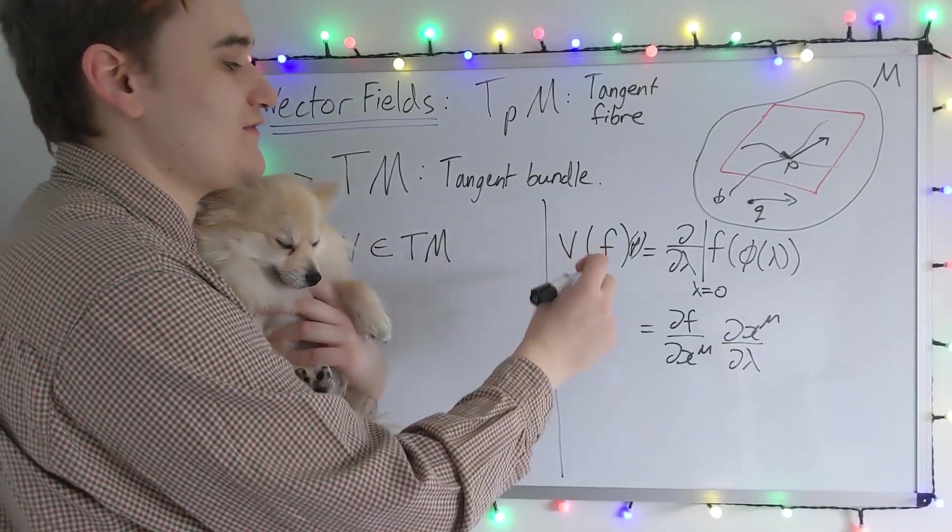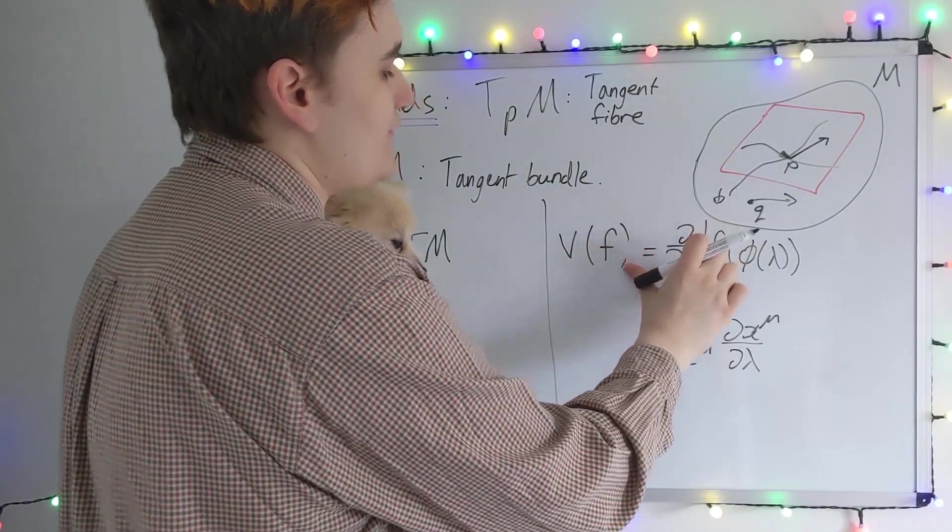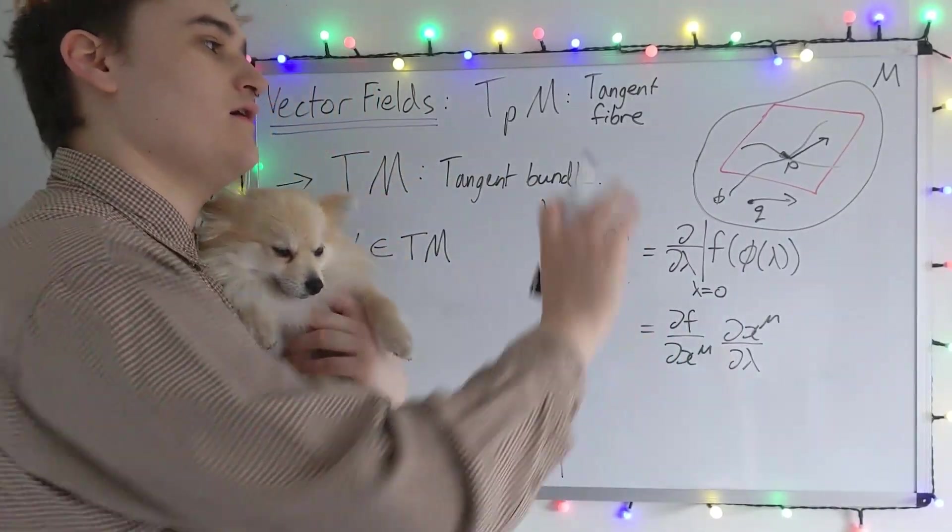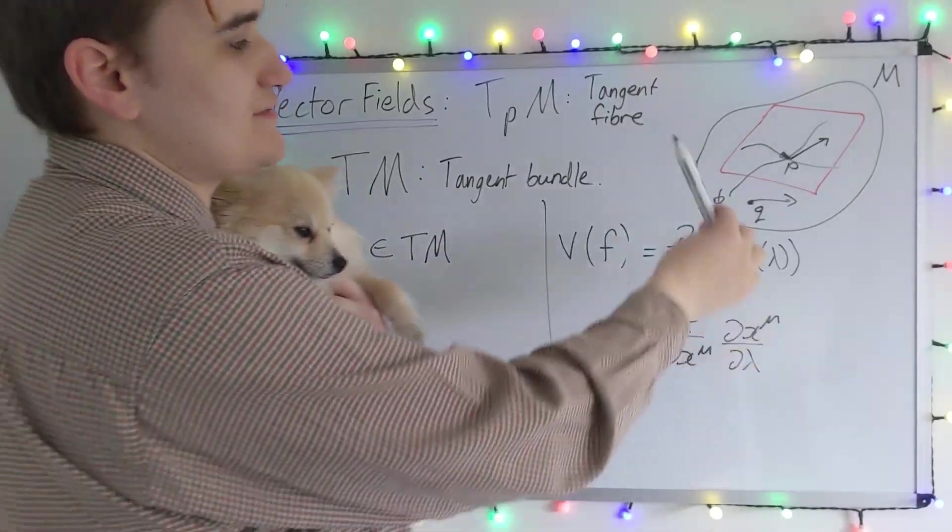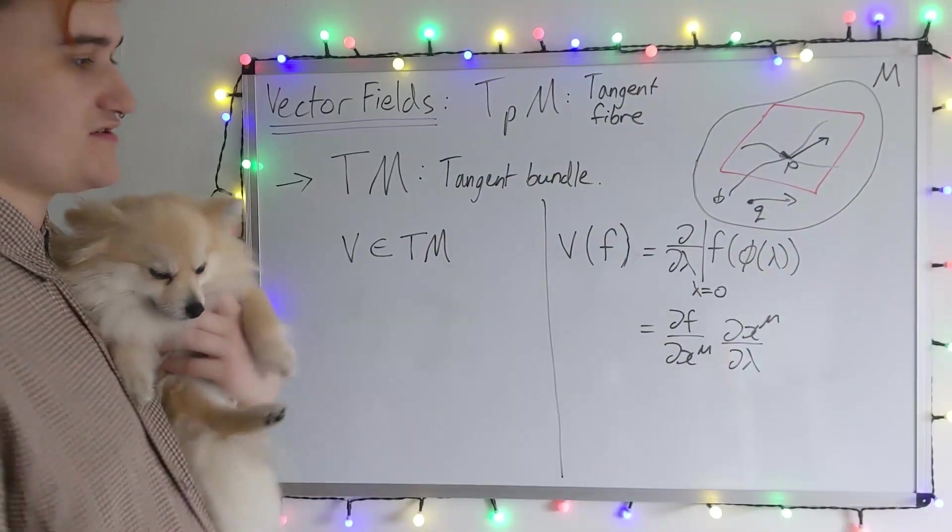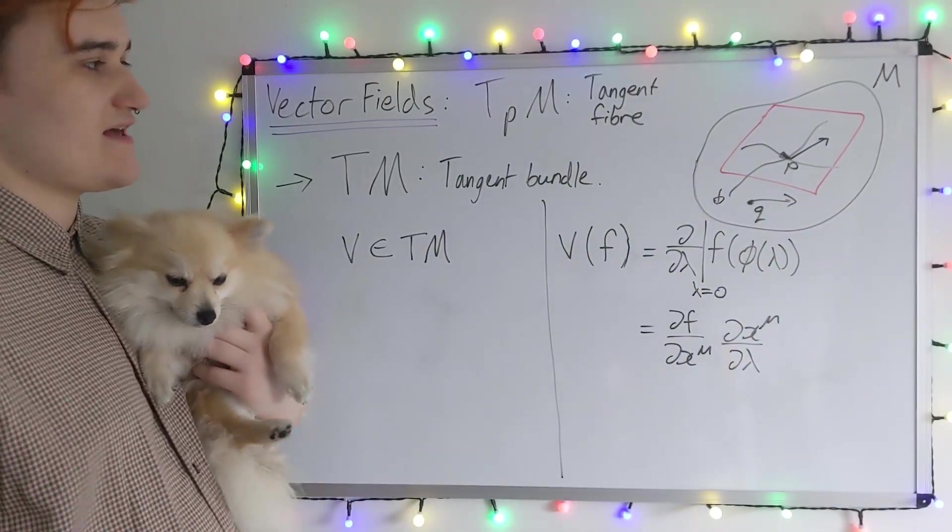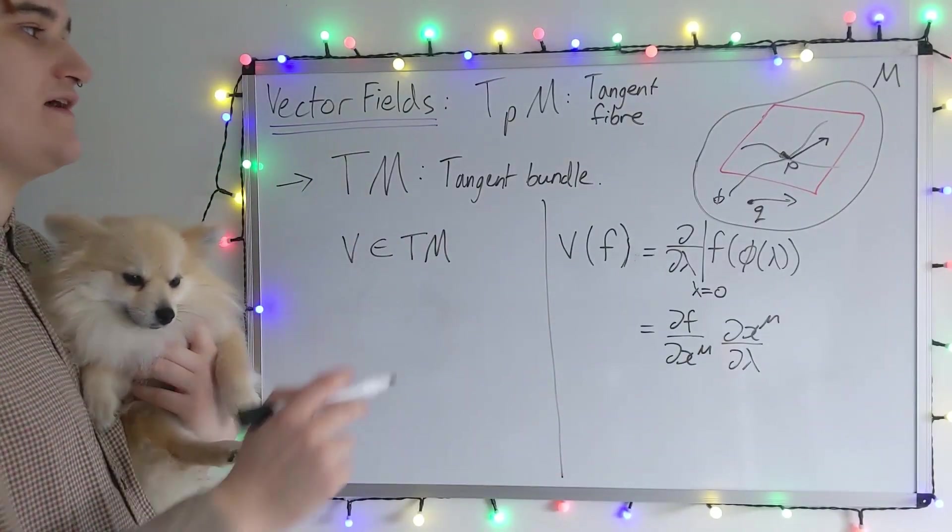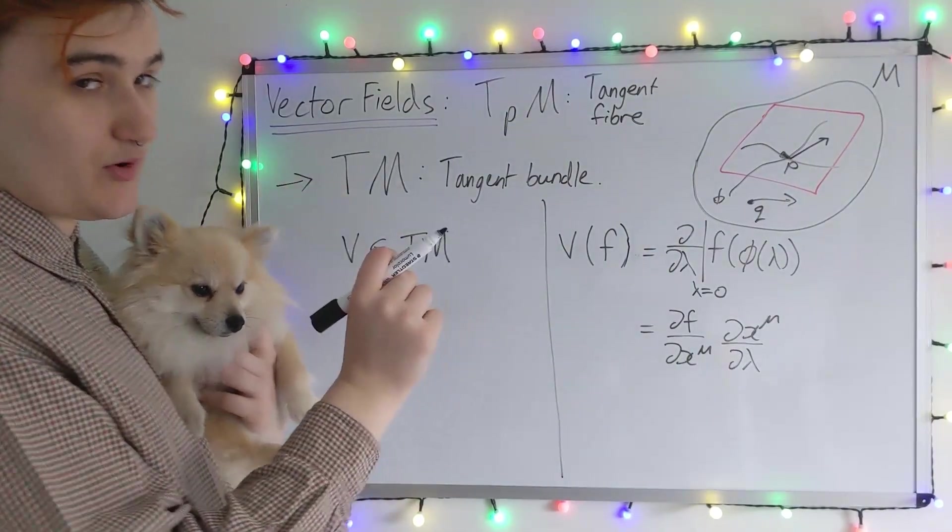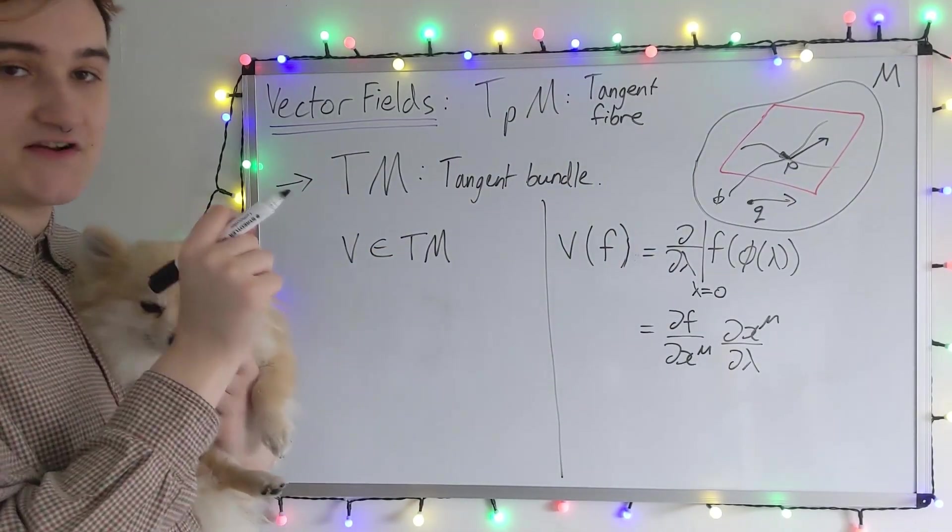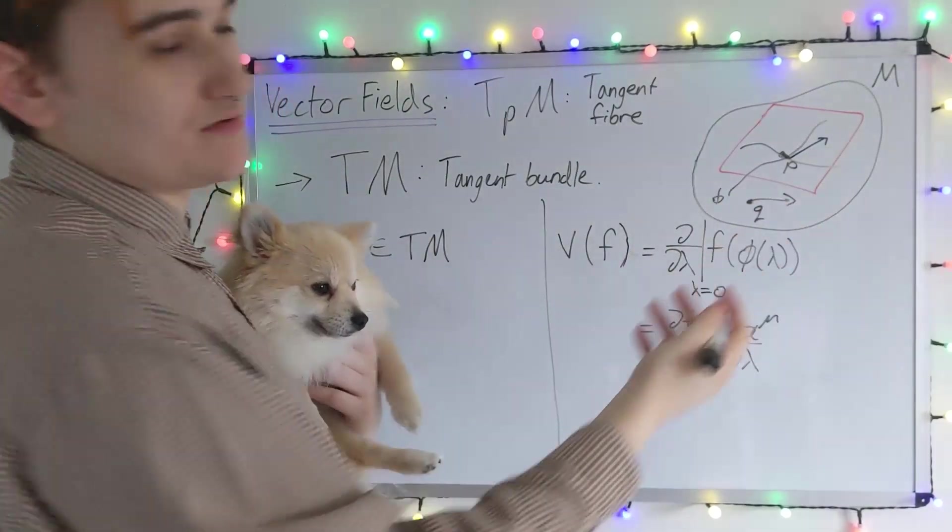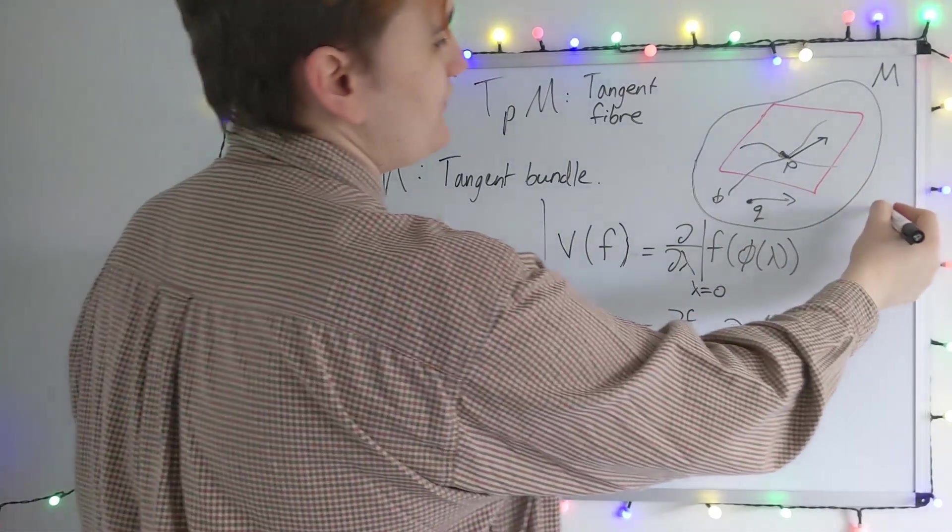If we now consider the vector field acting on the entire function, so we feed the entire function into what's now a vector field, we essentially get what the vector would be at every possible point in the manifold. A vector by itself is something which lives in the tangent space or the tangent fiber. This exists at a single point, and it maps a function evaluated at that single point into a vector, or just a d tuple of real numbers if our manifold is d-dimensional.